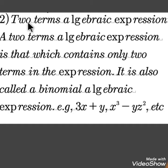Two-term algebraic expression: A two-term algebraic expression is that which contains only two terms in the expression. It is also called a binomial algebraic expression, e.g., 3x plus y, x cubed minus yz squared, etc.